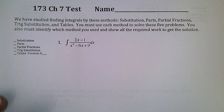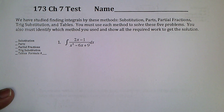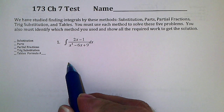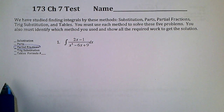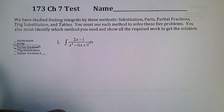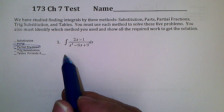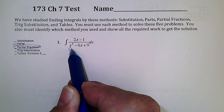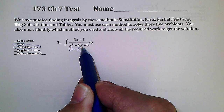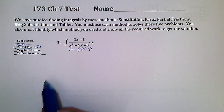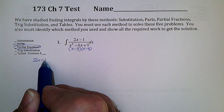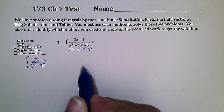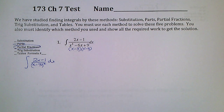Let's go over the Chapter 7 test. Number 1 — I think would be easiest to do by partial fractions. You might be able to do by parts or by substitution. I'll try some of those and see what happens. But partial fractions: since this denominator factors to (x−3)(x−3), we'd have the integral of (2x−1)/(x−3)² dx.